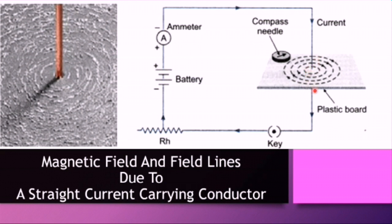The diagram shows a wire carrying current in the downward direction. If we sprinkle some iron filings onto the horizontal plastic board and tap it gently, the iron filings will line up along the lines of flux — arranging themselves in concentric circles. If we place a small compass on the board, with current flowing down the wire the compass will point in the clockwise direction. Reversing the current by changing the battery terminals causes the compass needle to deflect in the opposite, anti-clockwise direction.